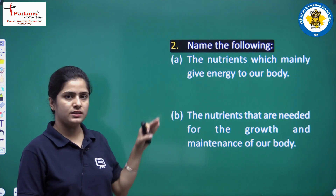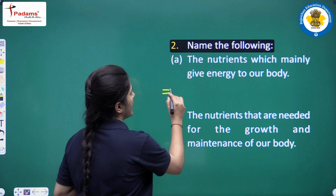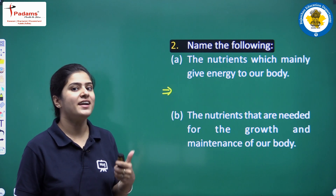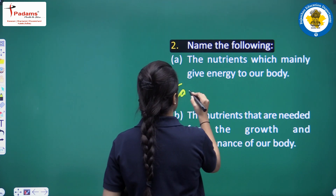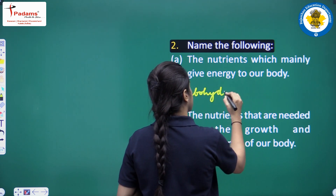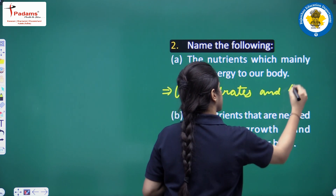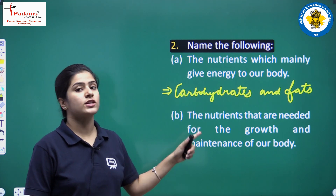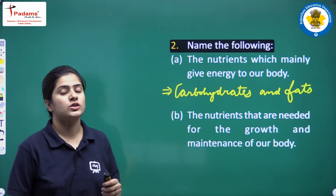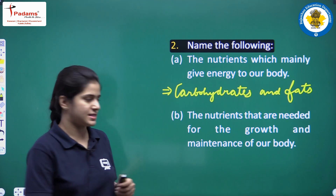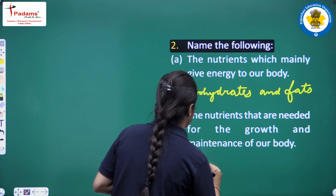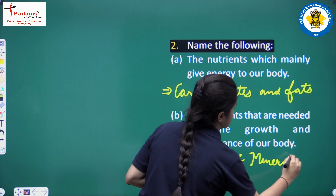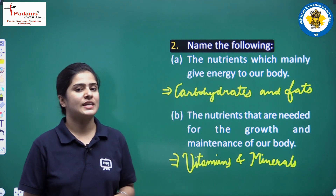The next question asks us to name the following. First: the nutrients which mainly give energy to our body — the answer is carbohydrates and fats. Second: the nutrients needed for the growth and maintenance of the body — the answer is vitamins and minerals.